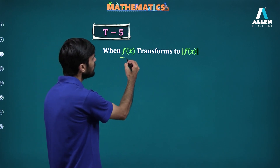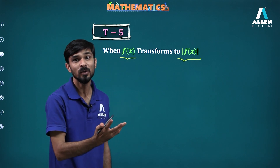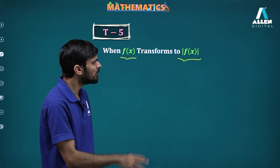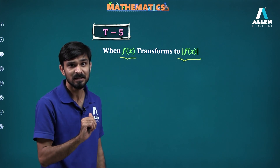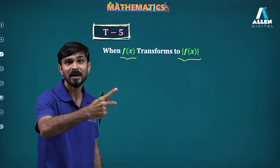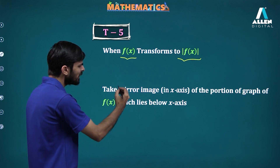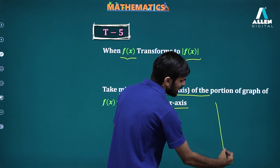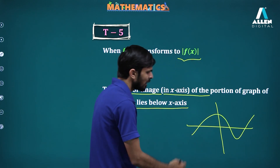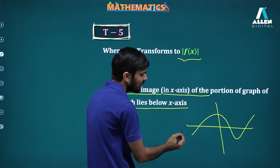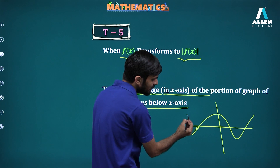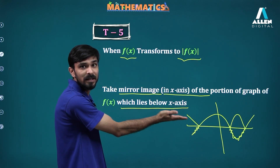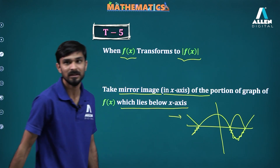Another profile is f(x) getting transformed to mod of f(x). The mod converts negative values to positive and does not interfere with positive ones. So wherever f(x) is positive, the graph stays as it is. Wherever f(x) is negative, those values get converted to positive. We need to take the mirror image in the x-axis of the portion of the graph which lies below the x-axis. Whatever portion is above the x-axis, we don't interfere with. Whatever is below gets reflected up, so all the graph will be above the x-axis.